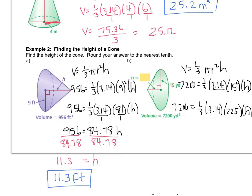Now I have to pretend like I'm multiplying all of these fractions. 1 times 3.14 times 225. And then all of that gets divided by 3. I get 7200 equals 235.5 h.